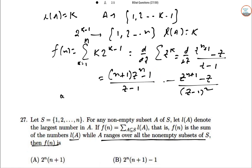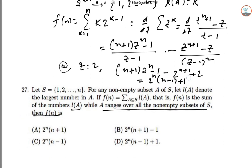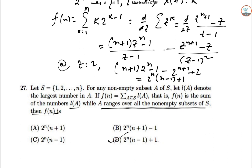At Z = 2 we get (N+1)2^N - 2^(N+1) + 2. So this is 2^N(N-1) + 1. So D is the correct option.